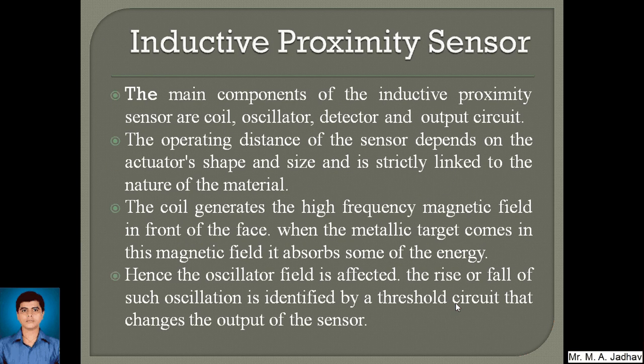Inductive proximity sensors have four main components: a coil, an oscillator, a detector, and an output circuit. The operating distance depends on the actuator shape and size, which is strictly linked to the nature of the material. The coil generates a high-frequency magnetic field in front of the face of the sensor. When a metallic target enters the magnetic field, it absorbs some energy from the field, affecting the oscillator. The rise or fall of the oscillations is identified by a threshold circuit that changes the output of the sensor.